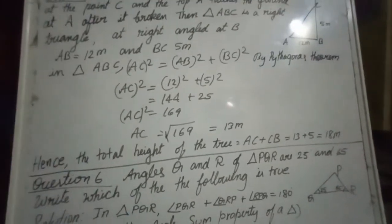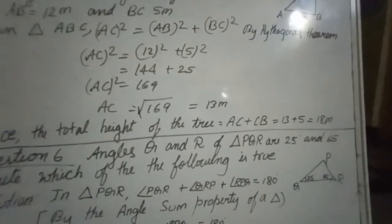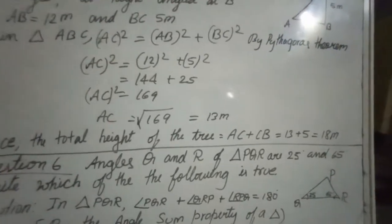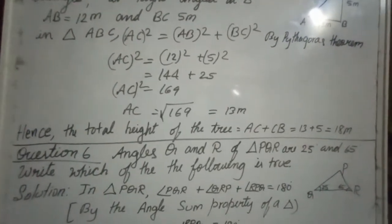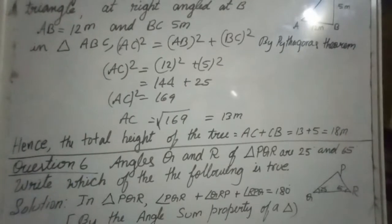In triangle PQR, angle P plus angle Q plus angle R is equal to 180 degree by the angle sum property of a triangle.